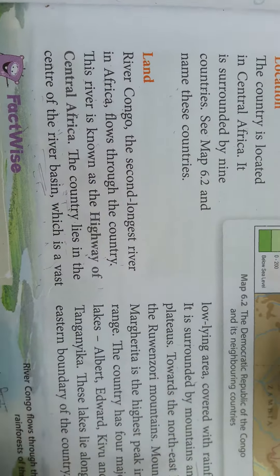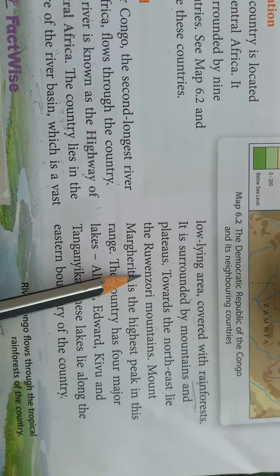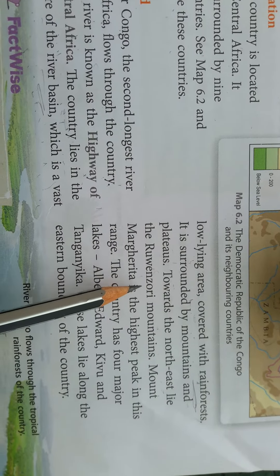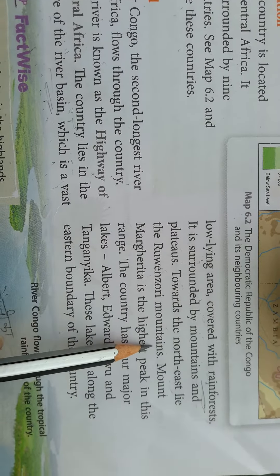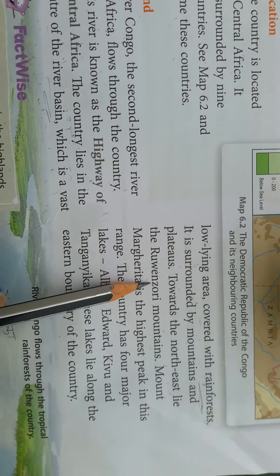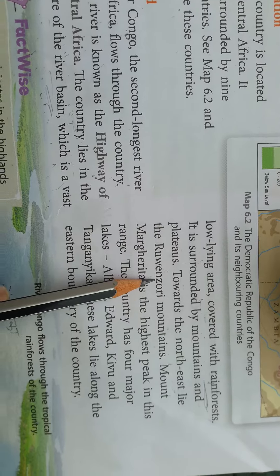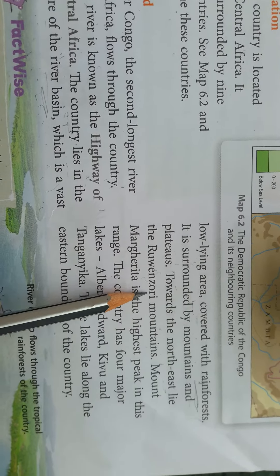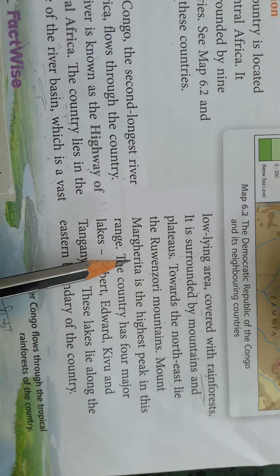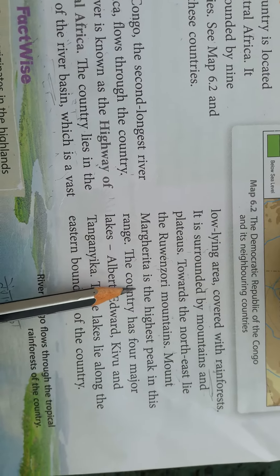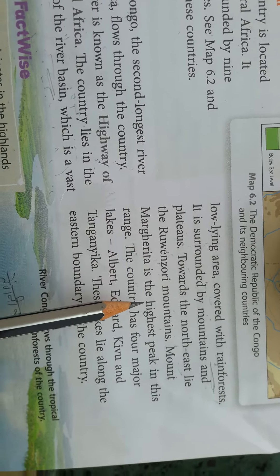The country is surrounded by mountains and plateaus on each side. Towards the northeast lie the Rwenzori Mountains. Mount Margherita is the highest peak in this range.